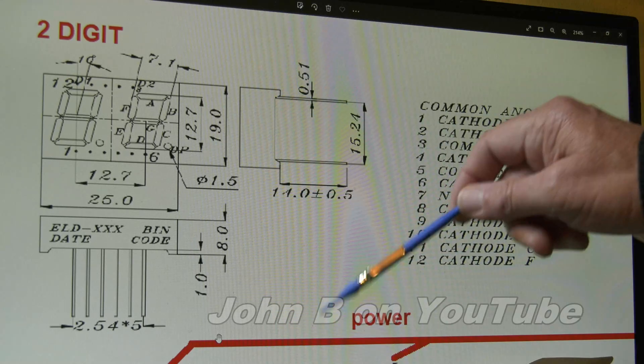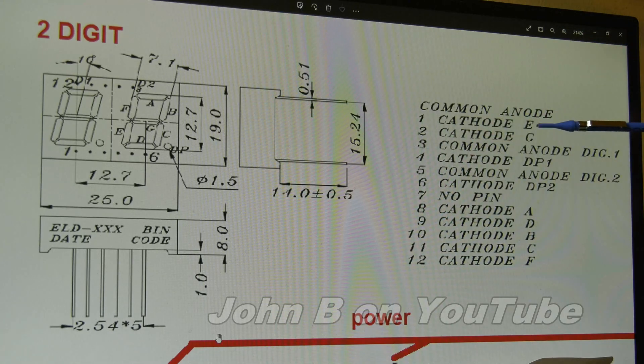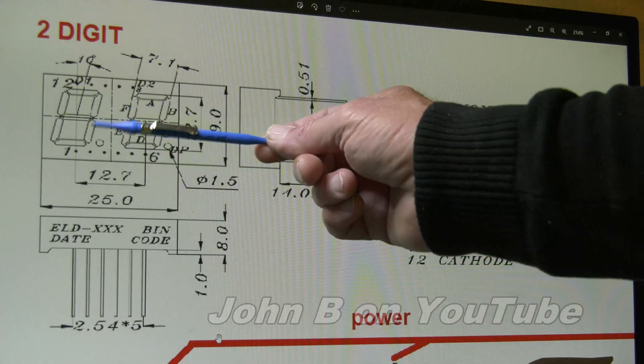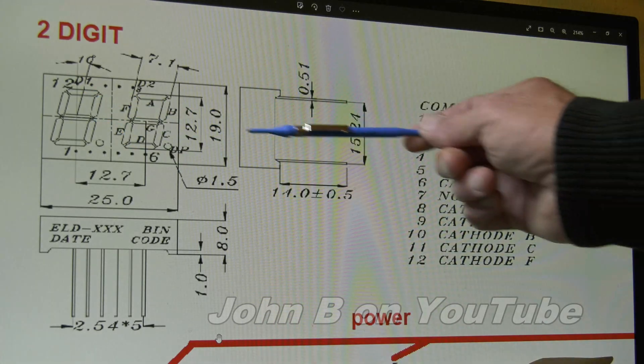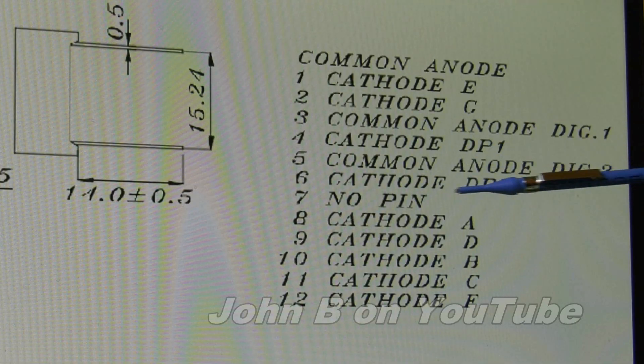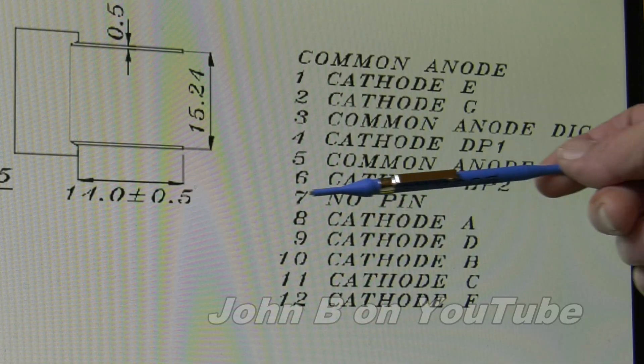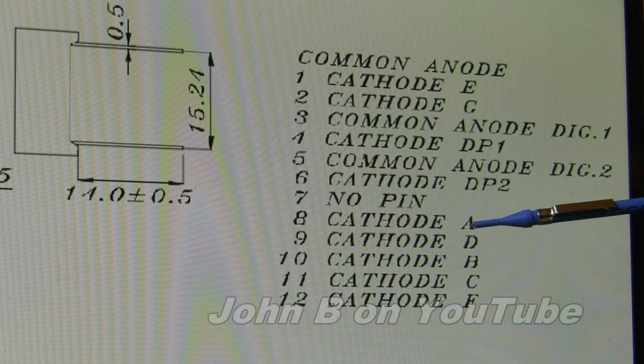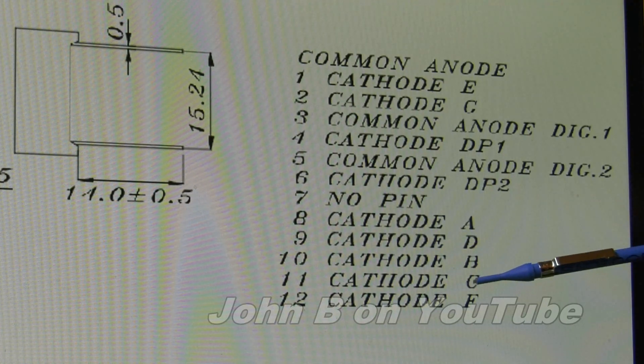So this is a common anode. I'll show you the picture in a minute. So we've got E, G, anode for digit one, anode for digit two, that's where the power goes, cathode for decimal point one, cathode decimal point two, number seven, no pin, cathode A, D, B, C, F.